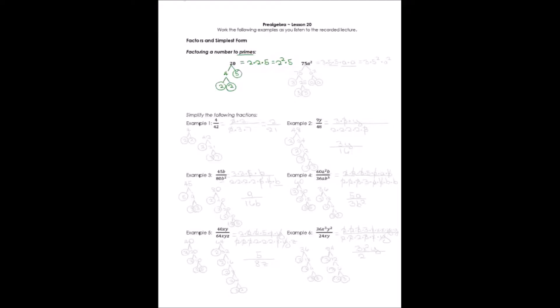Let's try something that has a variable term: 75a squared. The variables aren't really hard — we just split them out first: 75 times a squared. Let's factor each of them. For 75, it doesn't matter where we begin. I always think of 75 as quarters, so I'll say 3 times 25. Well, 3 is prime, so I'll circle it. 25 I can factor again: 5 times 5 gives me 25. Both of those are prime. So I'm through with 75.